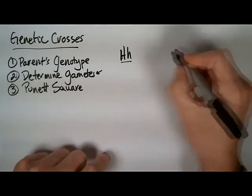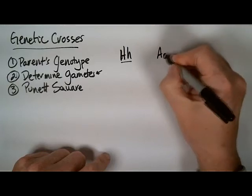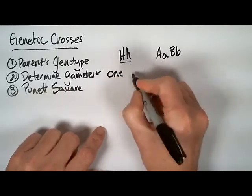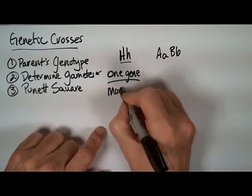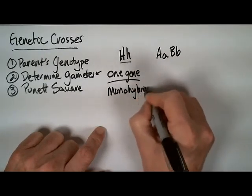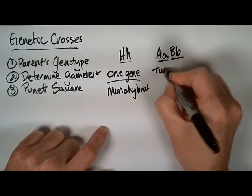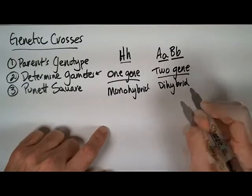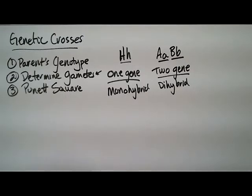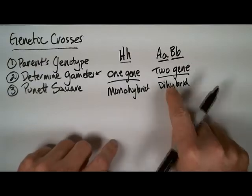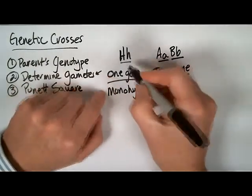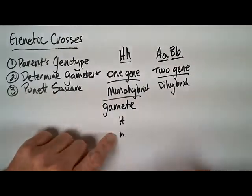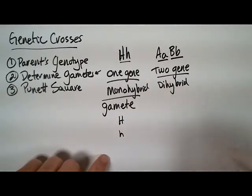Now, if we had an individual that was big A, little a, and big B, little b — now what we're looking at is not just one gene here. We're now looking at two genes, what's called a dihybrid. We'll talk about that in a different video. The confusing part is here with the gametes.